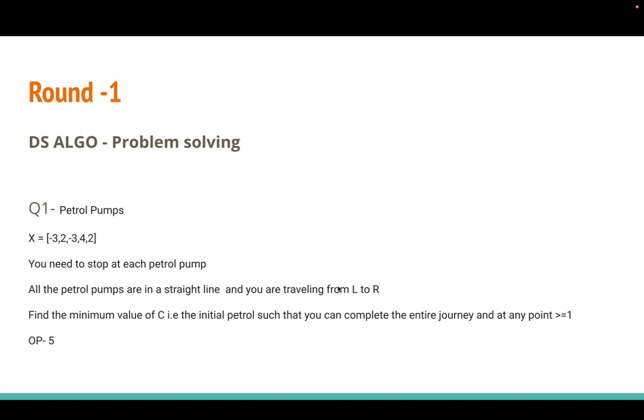You're traveling from point L to R, and you have to stop at each petrol pump in between. Negative numbers mean petrol is deducted from your vehicle, positive numbers mean petrol is added. You have to ensure at each point your petrol value is greater than or equal to one. The question is: find the minimum petrol you need to start with so that at every point you remain with petrol greater than or equal to one.